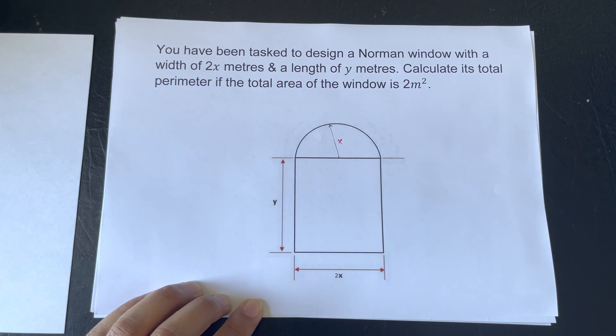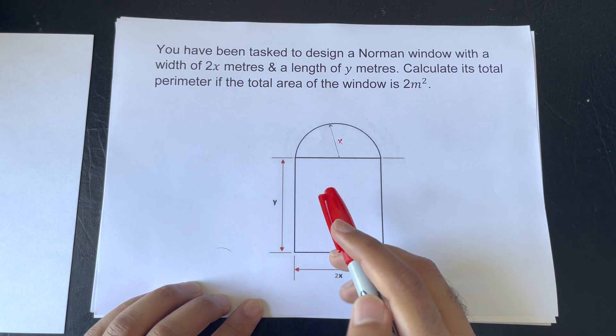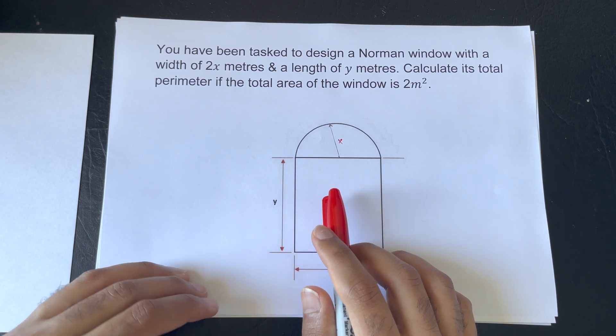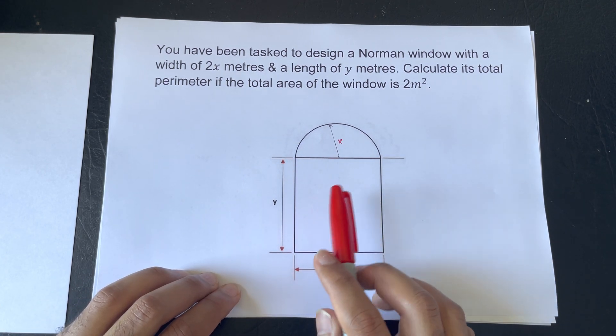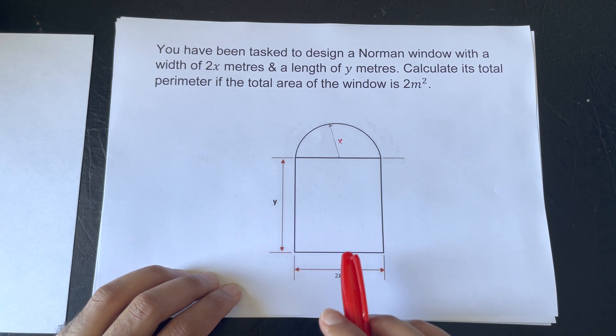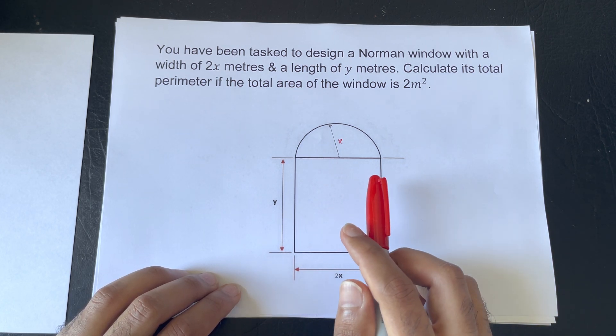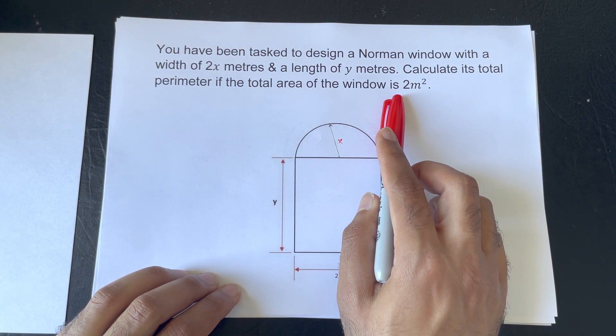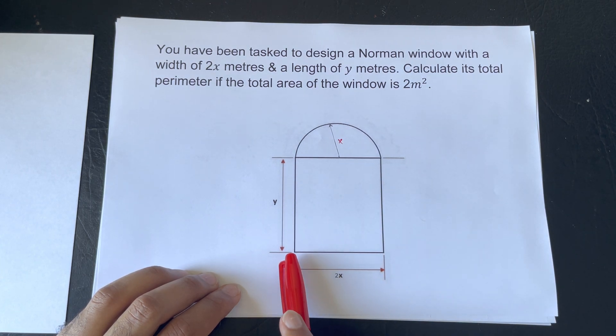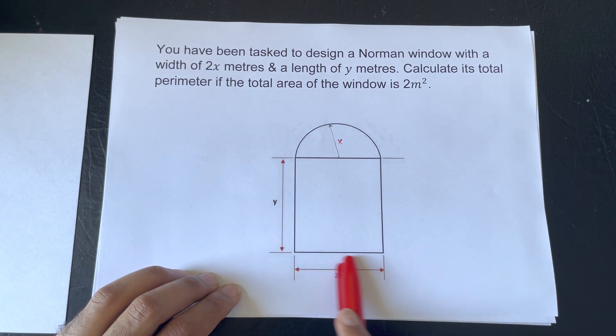Now, I've seen videos out there on YouTube where they ask and solve calculate its maximum area, or maximum light that can come through the window. Mine's slightly different, where we've been given an area, and the question is asking, calculate its perimeter.